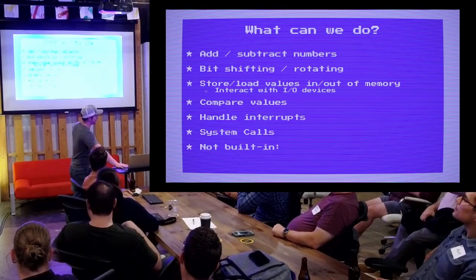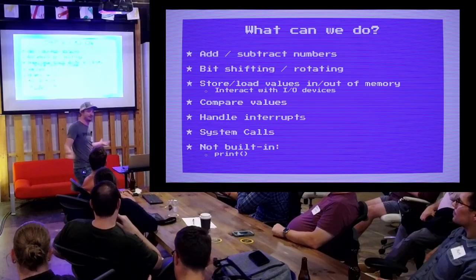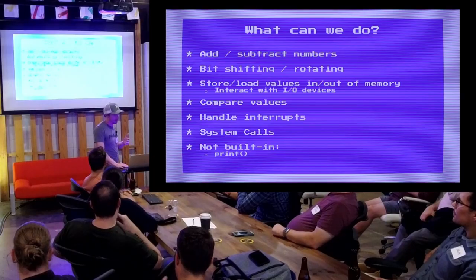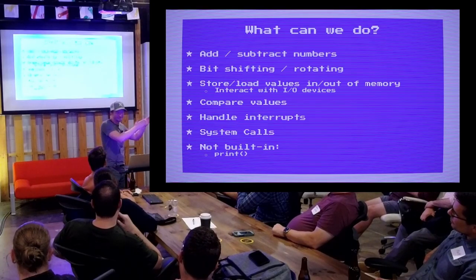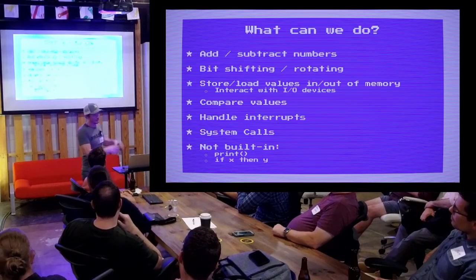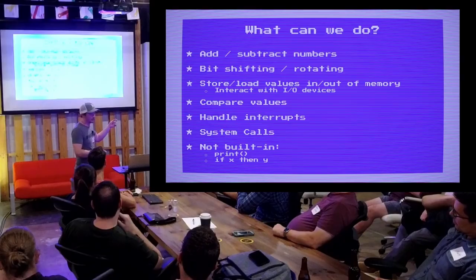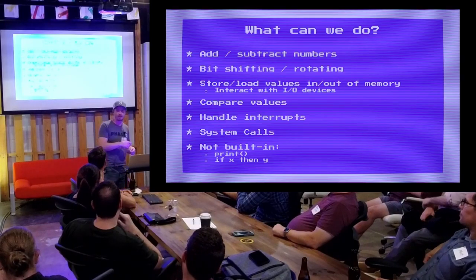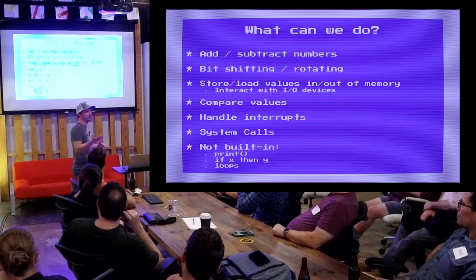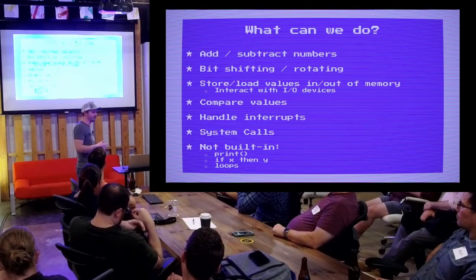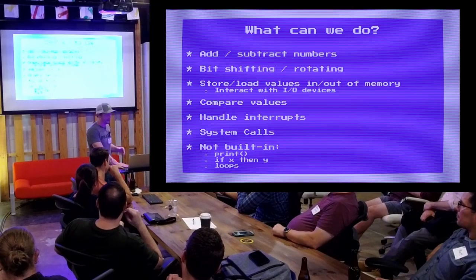Notably, what's not built in — just a few examples of what isn't built in that we take for granted — is any kind of print function. That doesn't exist, at least not in the Commodore 64. There's not even a console or anything, so you have to manually say print this character to this place in screen memory. If conditions, if statements, if blocks — those don't really exist. You can do comparisons and then branch based on the result, which is effectively like an if statement, but it's not as clean or easy. Similarly with loops, you can't just write a for loop or a while loop the way we're used to in modern languages.